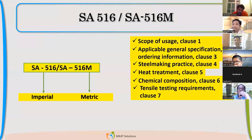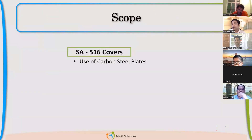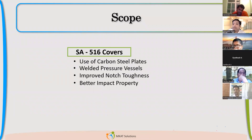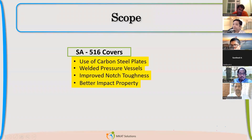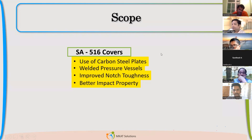Diving deep into the scope: it is a carbon steel plate which you should use for welded pressure vessels. Why do we prefer SA 516 over other carbon steel materials in plate form, like SA 36 or SA 283? Because it has very good notch toughness. As Jagdish correctly pointed out, that gives us better impact properties.